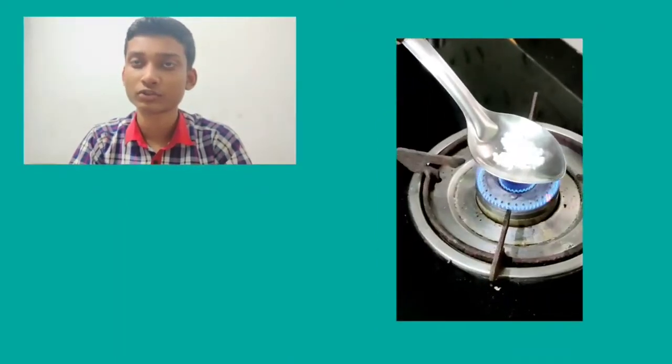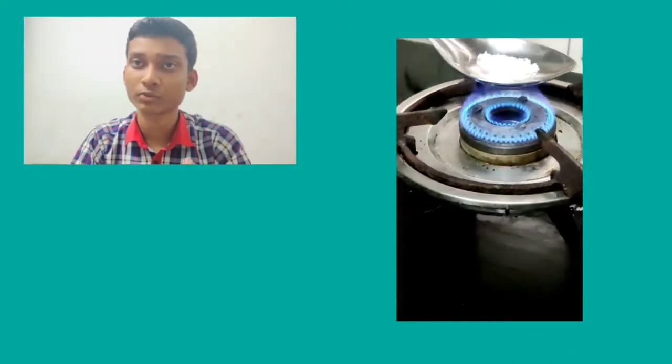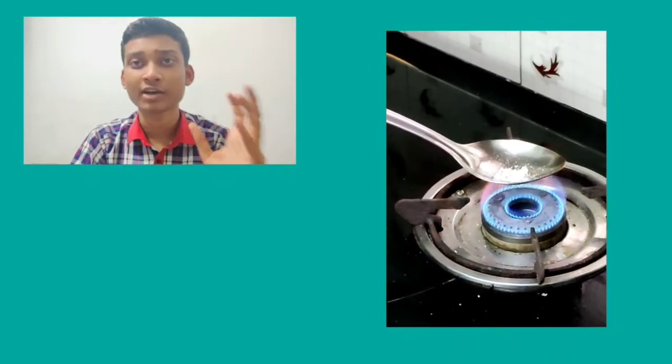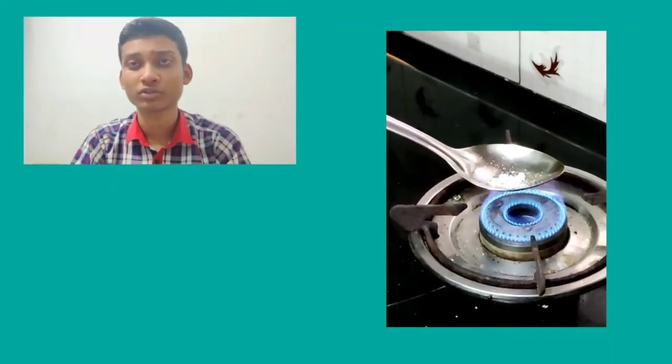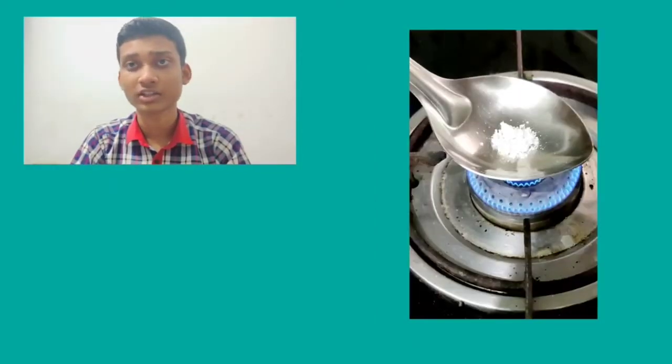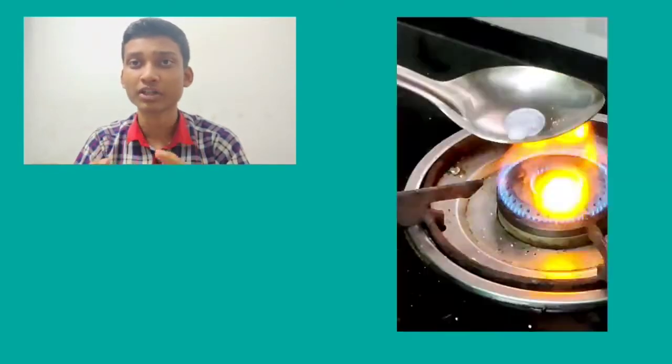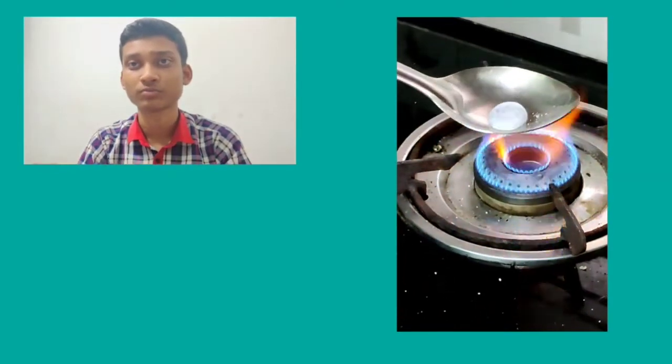Now heat this sample of salt. What do we observe? We observe that salt takes a lot of time to melt. This means that ionic compounds have high melting and boiling points. Now why is that? It is because of strong inter-ionic attraction between the particles in ionic compounds.